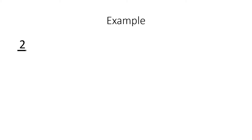For an example, let's say we have a fraction, 2 fifths. 2 is the numerator, 5 is the denominator. You take the top number, which is 2, divide it by 5, the denominator, and type it in your calculator. You could do it by long division if you know how, but the answer will be 0.4. That's it. That is how you convert a fraction into a decimal.